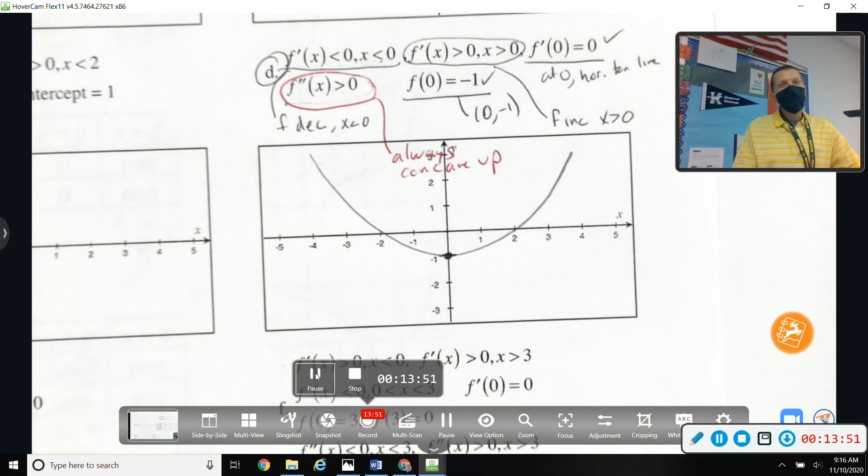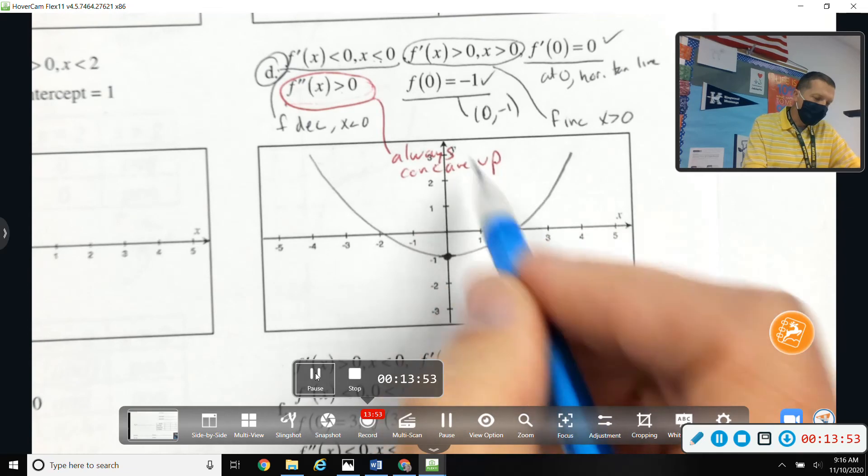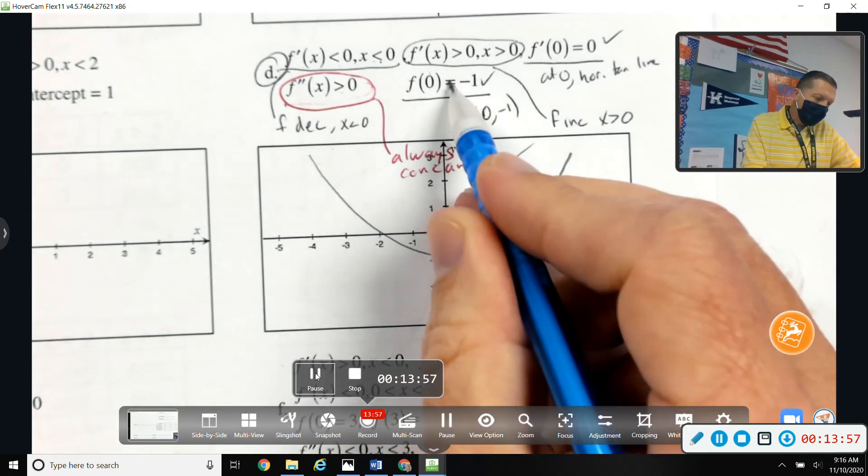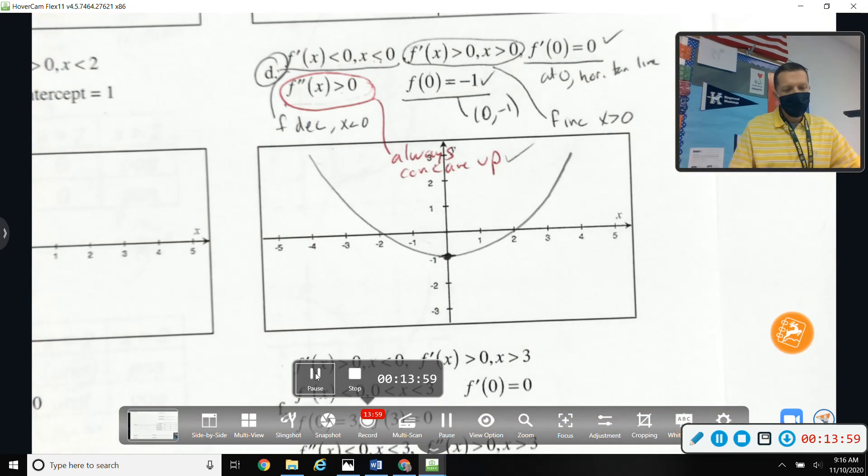And then if you really want to be careful and be sure, you go back and check. Yep, that's concave up. You go back and kind of double check all your criteria that you met them.